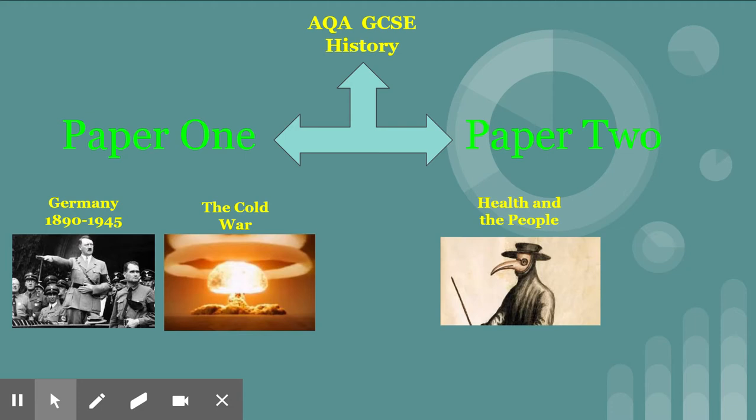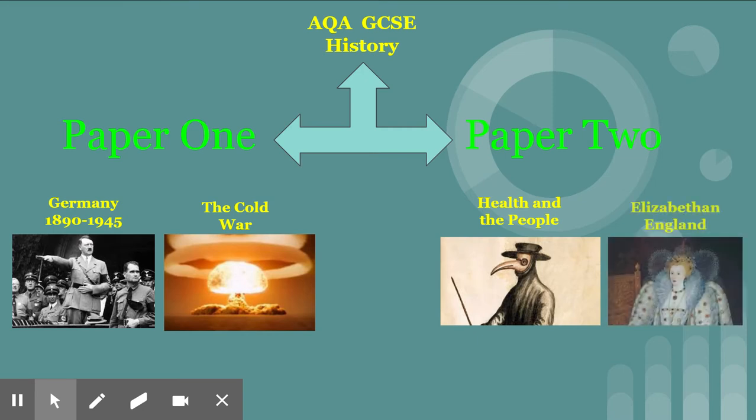Also on paper two, we look at Elizabethan England. We look at Queen Elizabeth, how she ruled as a woman and how that made things difficult for her. We look at questions of marriage, her relationship with Spain, with her courtiers. We look at key events like the Armada, and how exploration started to open up Britain and lay the foundations for the British Empire.